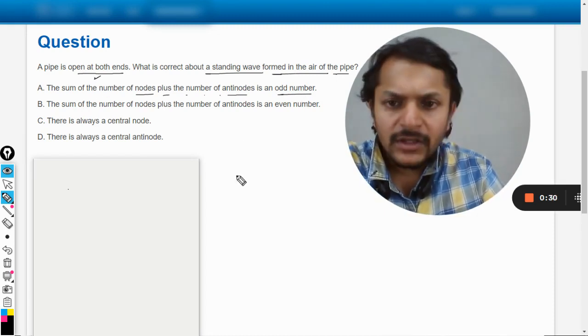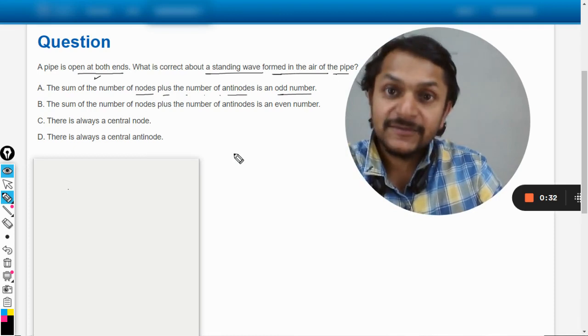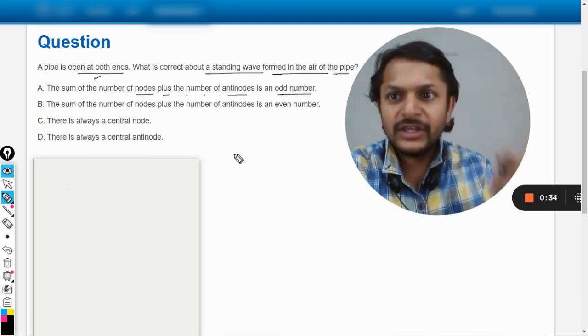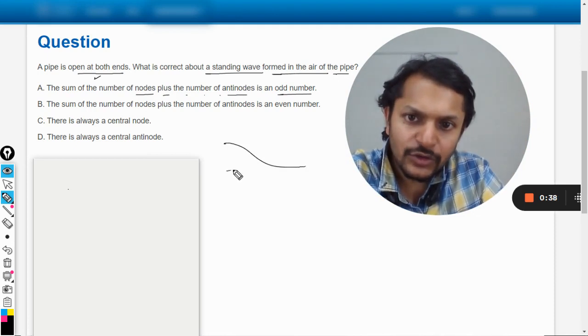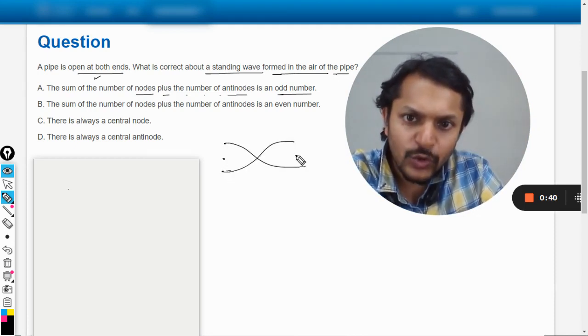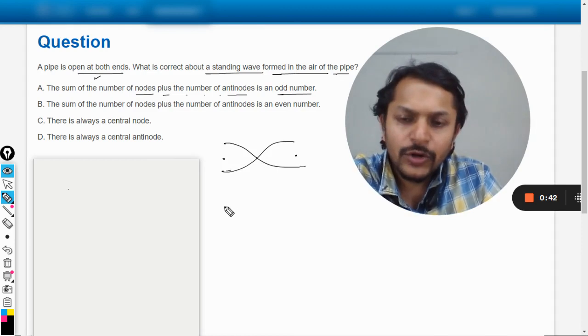We have to take one case, so let us talk about the first harmonic in the case of both ends open. So how it looks like? It looks like this, so that's two antinodes and only one node.